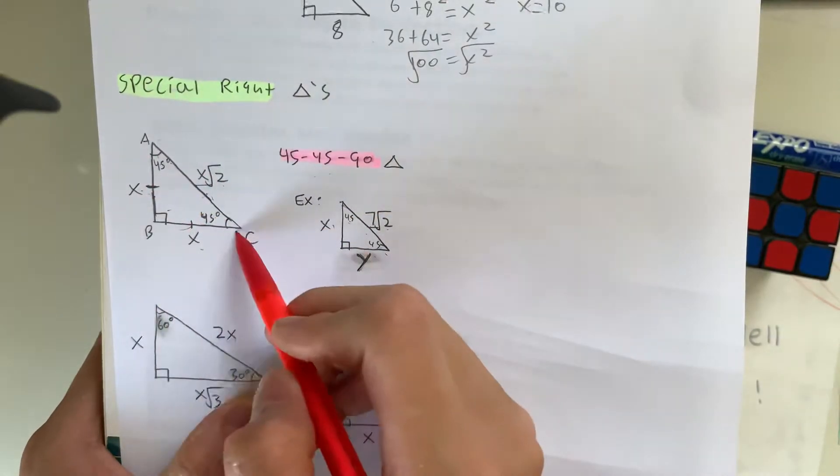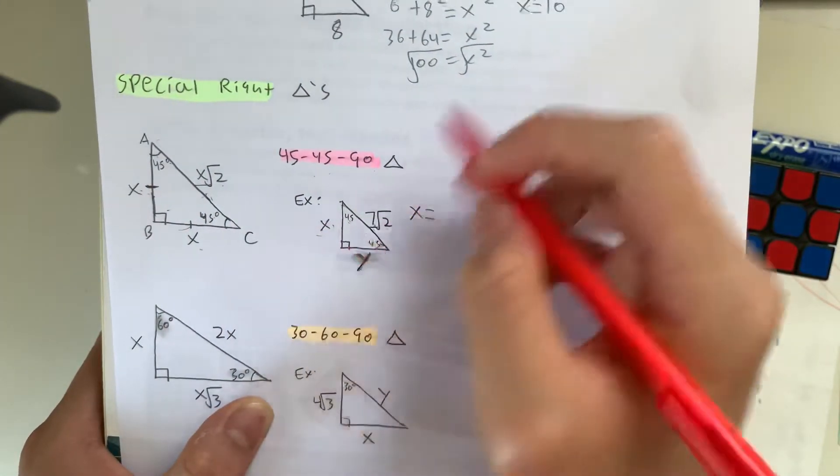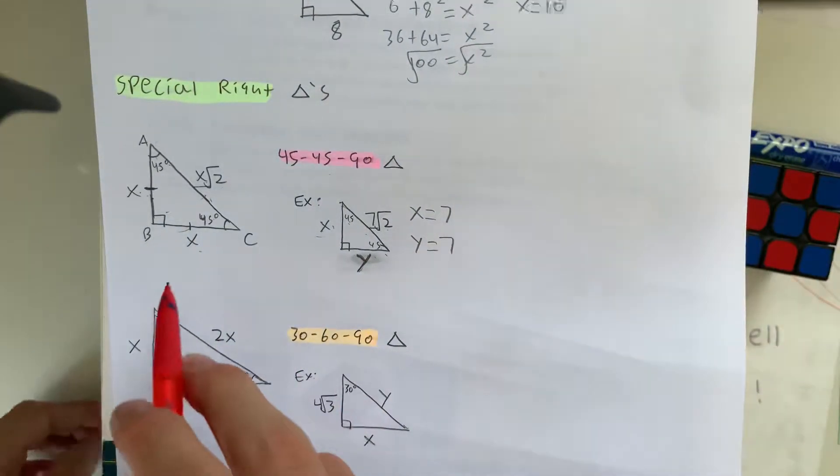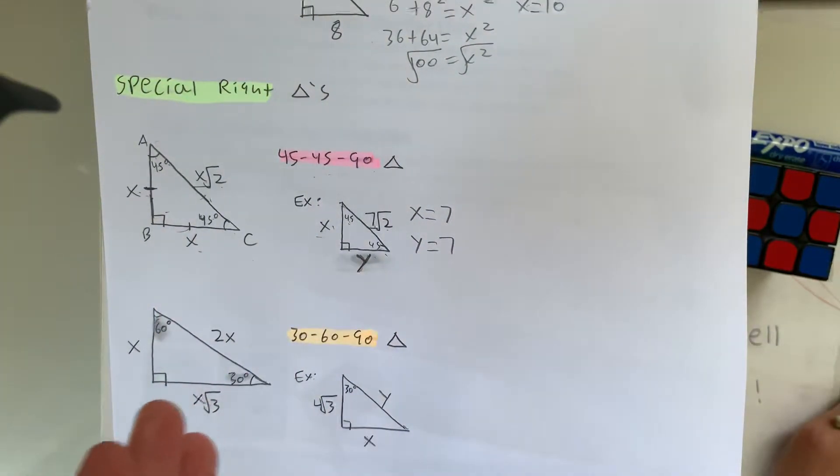So these values are also x, meaning that the value of x right here is going to be 7, and the value of y is going to be 7. So this is how you're going to apply the 45-45-90 triangle to figure out the lengths of each leg.